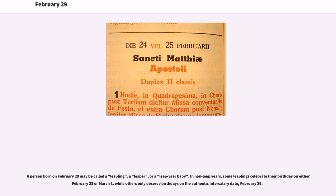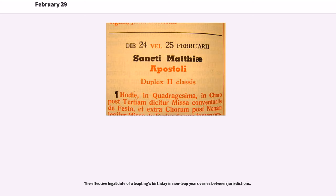A person born on February 29th may be called a leapling, a leaper, or a leap year baby. In non-leap years, some leaplings celebrate their birthday on either February 28th or March 1st, while others only observe birthdays on the authentic intercalary date, February 29th. The effective legal date of a leapling's birthday in non-leap years varies between jurisdictions.